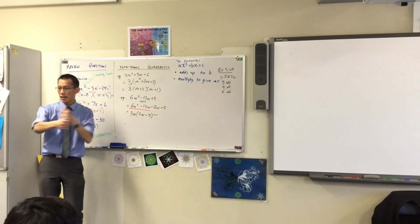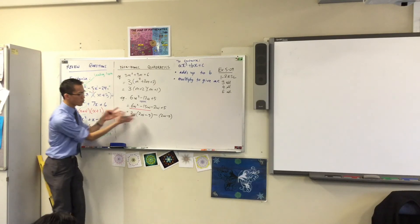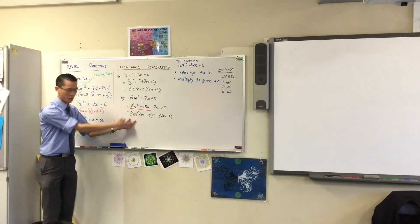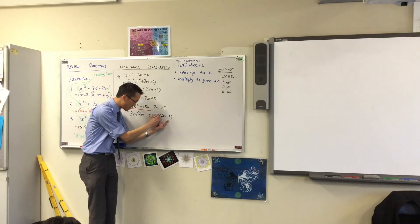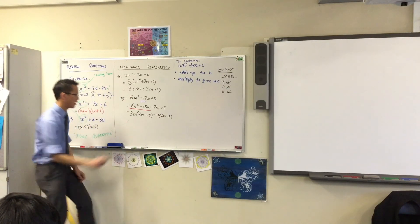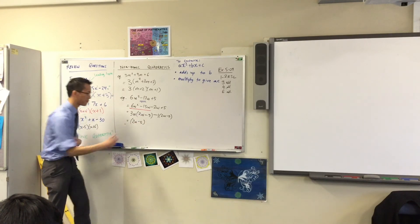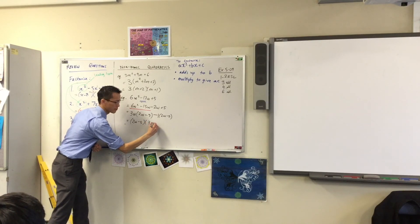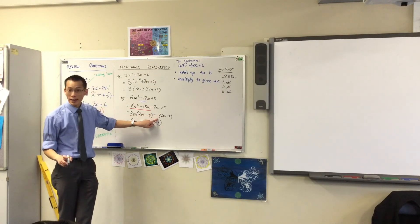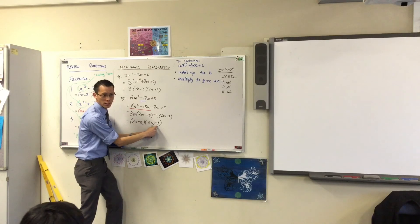If I take out a factor of negative 1, it'll switch the signs around. So 2W minus 5 is an object — I have 3W of them here and minus 1 of them there. Now I can factorize, taking out that common factor of 2W minus 5.